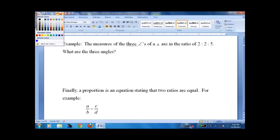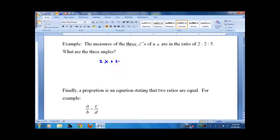Here's a nice example. Pause the recording, try it yourself, and then I'll do it. If the measure of the three angles of a triangle are in the ratio of 2 to 2 to 5, what are the three angles? Well, 2x plus 2x plus 5x equals 180, 9x equals 180, x equals 20.